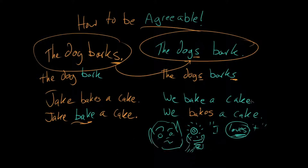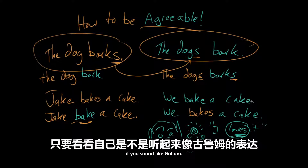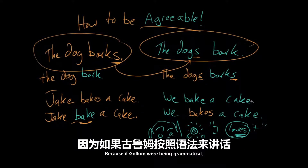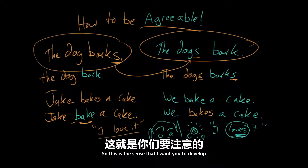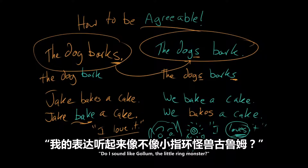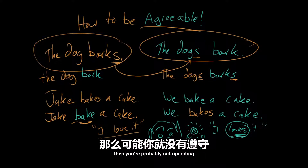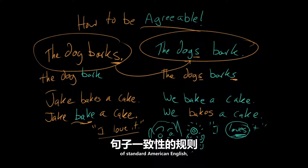So the test here is really: you can figure out whether or not you are using agreement in your sentences if you sound like Gollum. Because if Gollum were being grammatical, he would say I love it. So this is the sense I want you to develop — listen to yourself speak and ask, do I sound like Gollum, the little ring monster? Because if you do sound like Gollum, then you're probably not operating under the agreement rules of standard American English.